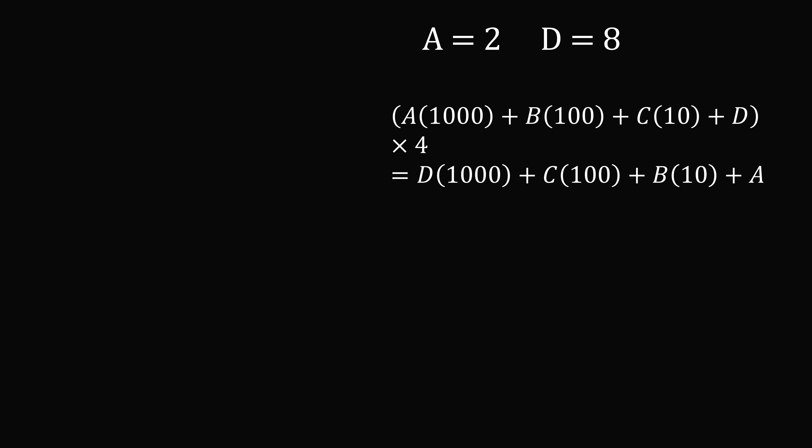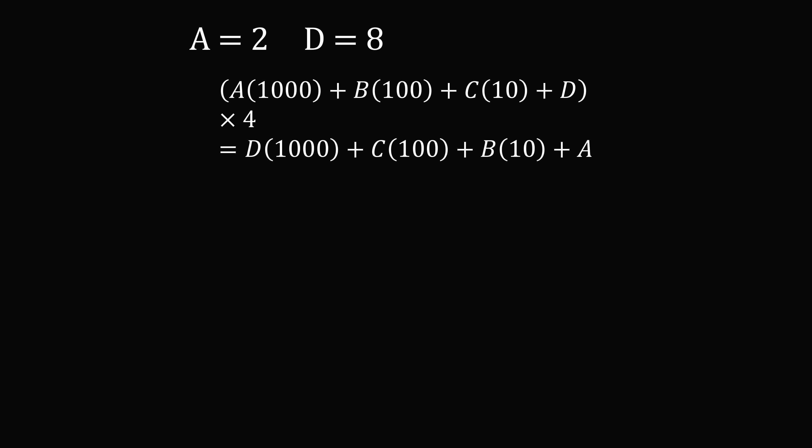And the result will be D times 1,000 plus C times 100 plus B times 10 plus A. We'll now go ahead and work through. We know that A is equal to 2, and D is equal to 8, so we substitute in. We can then simplify this, and then we can cancel out and group like terms.